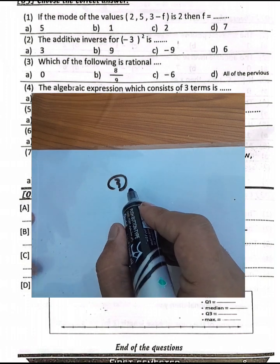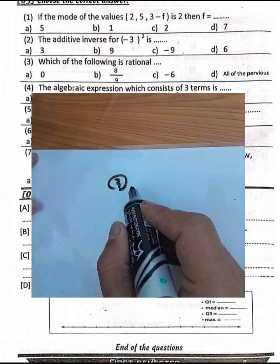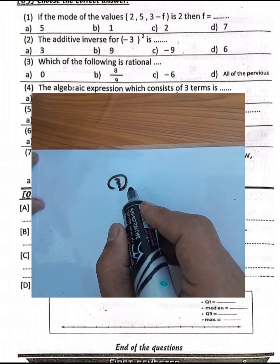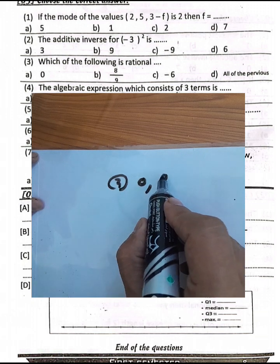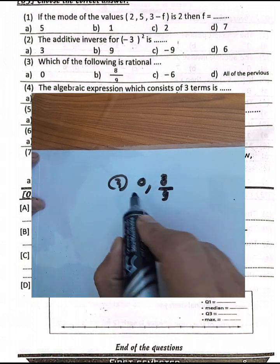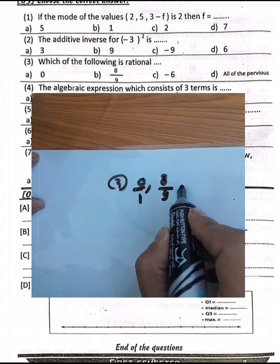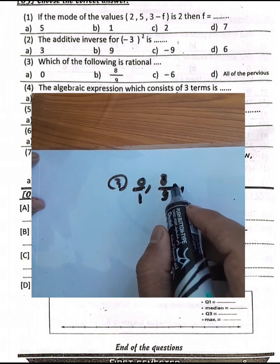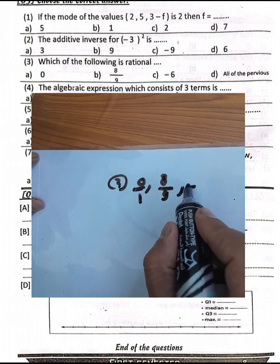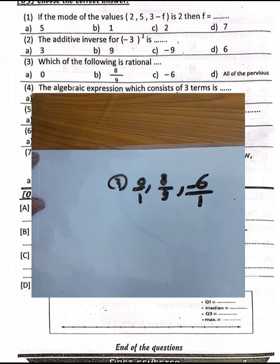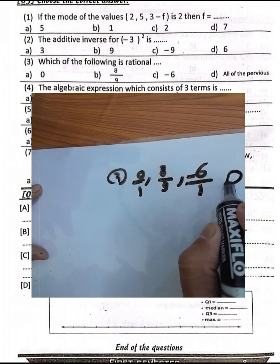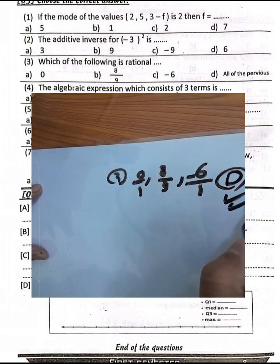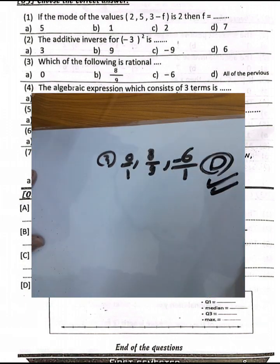MCQ question number 3: which of the following is a rational number? Zero is rational (written as 0/1), negative 6 is rational (written as -6/1), and 8/9 is rational. Choose letter D.